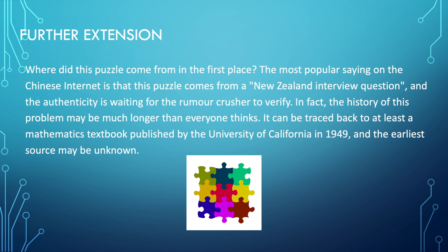Where did this puzzle come from in the first place? The most popular saying on the Chinese internet is that this puzzle comes from a New Zealand interview question, and their authenticity is waiting for the rumour crusher to verify. In fact, the history of this problem may be longer than everyone thinks. It can be traced back to at least a mathematics textbook published by the University of California in 1949. The earliest source may be unknown.